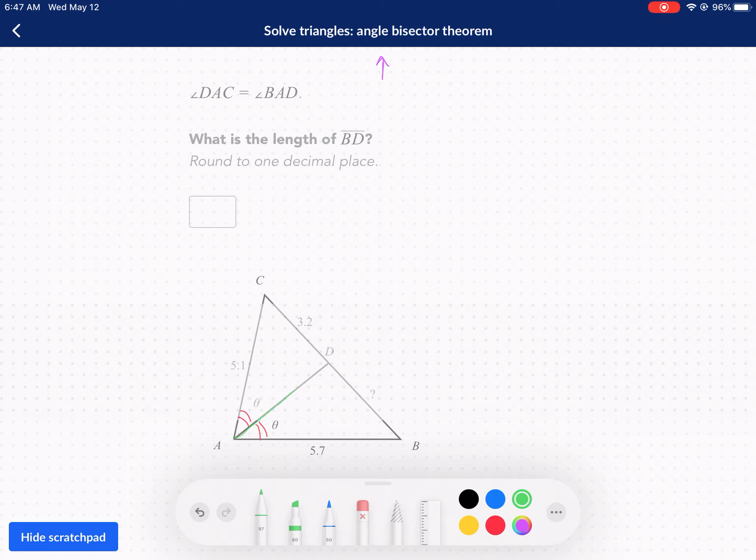First off, angle bisector, what does it mean? It's a line that bisects an angle. So here we have angle A, and it is bisected by this green line, DA. So DA is the angle bisector. And it bisects A into two equal parts, which are labeled as theta. So those are the two equal angles that it is bisected, bi meaning two.